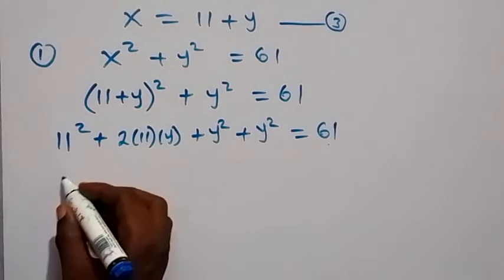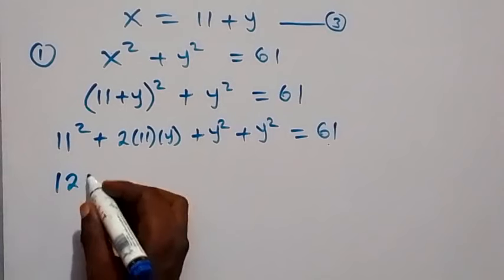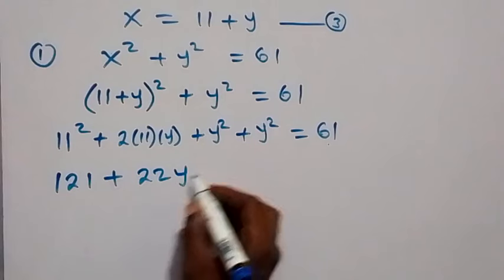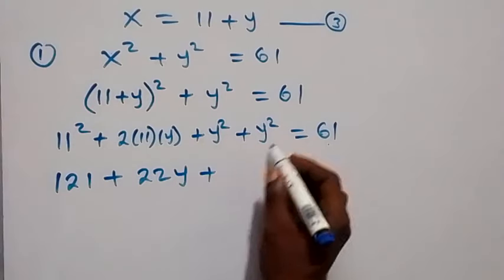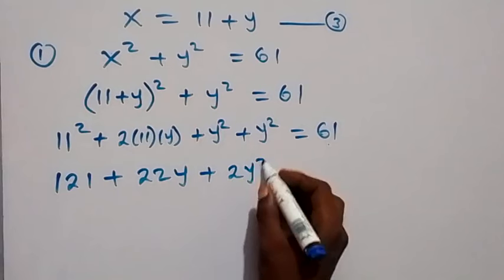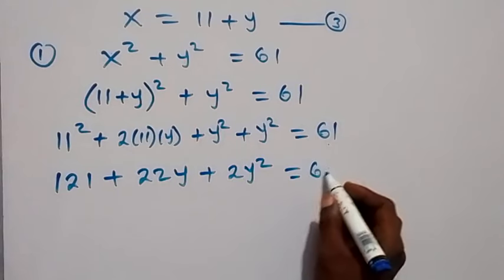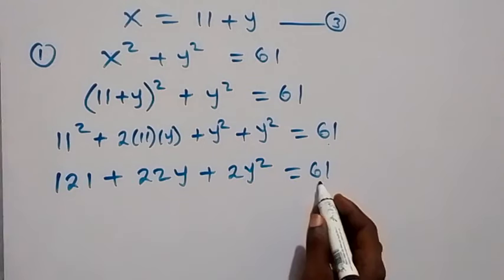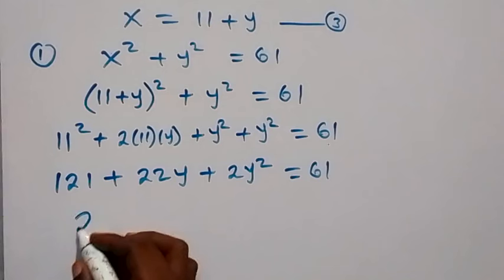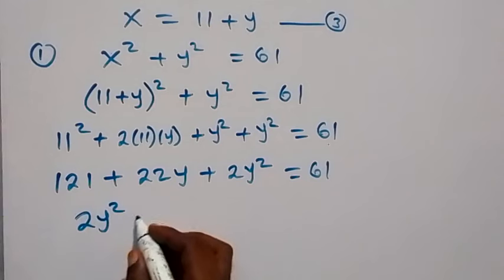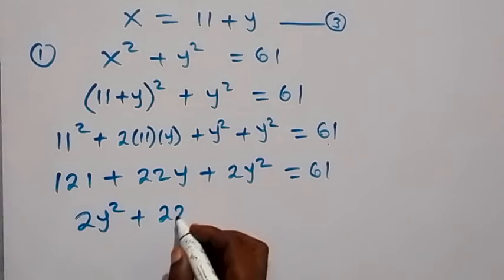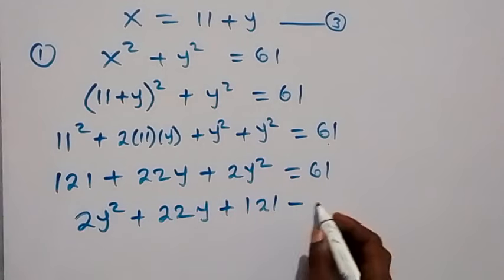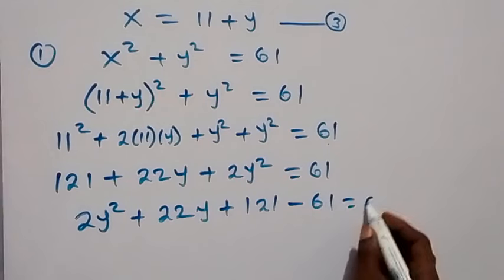From here, 11 squared is 121, plus 2 times 11 times y which is 22y, plus y squared plus y squared, that's 2y squared, which equals 61. Let's rearrange and bring 61 to this side: 2y squared plus 22y plus 121 minus 61 equals zero.